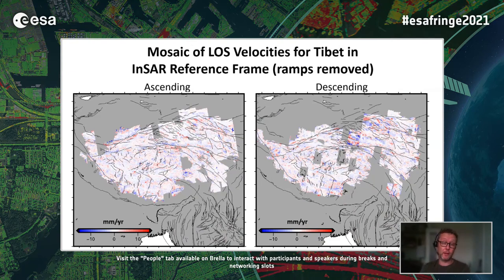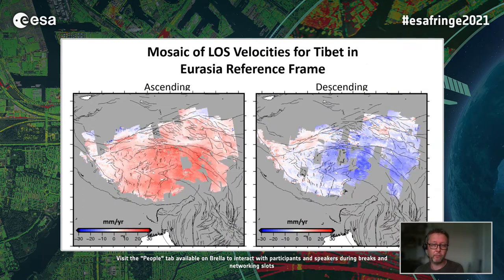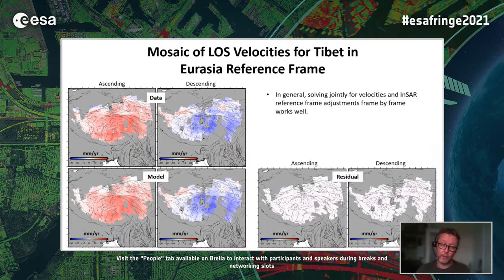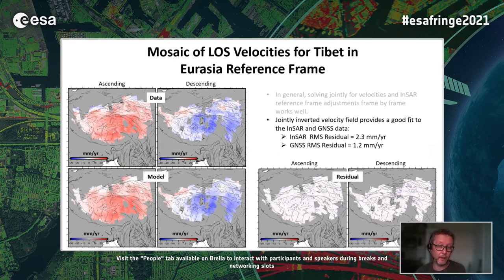If we look at the INSAR mosaics with ramps removed, this is really the information there in the INSAR data. Adding those ramps back in, you get to see the tectonic motion beautifully in the ascending and descending velocity fields. In particular, you can see color changes across the Kunlun Fault, the Altyn Tagh Fault, and other faults in northeast Tibet. The model data residual for the 3D velocity model produced by VELMAP does a pretty good job, fitting INSAR to around 2.3 millimeters per year and GNSS to about 1.2.